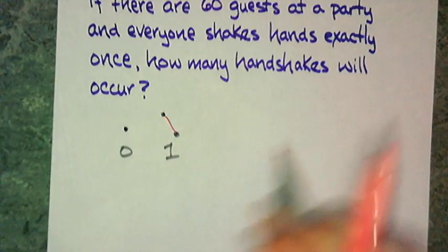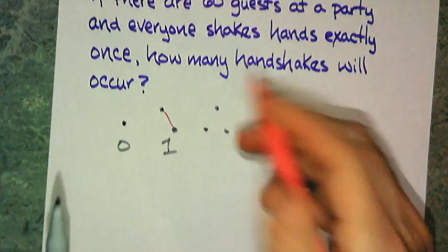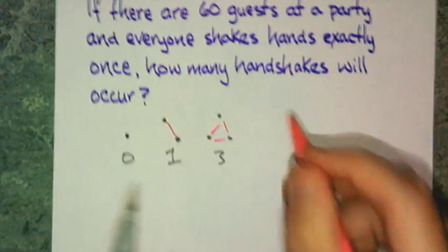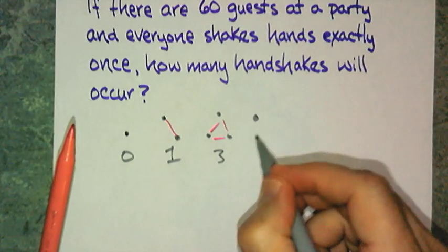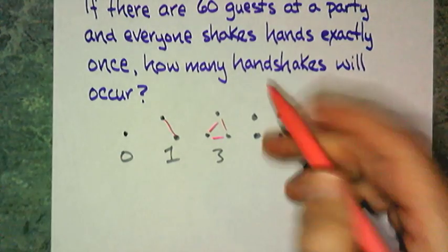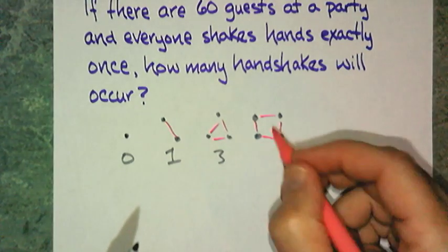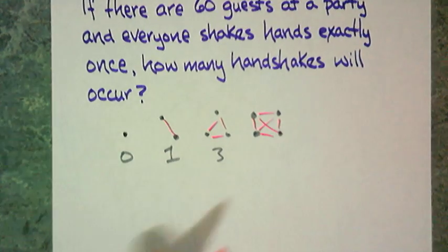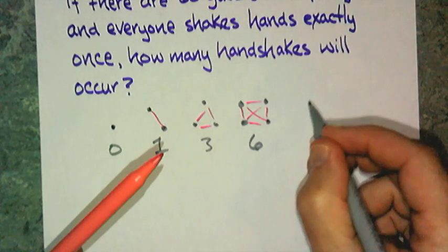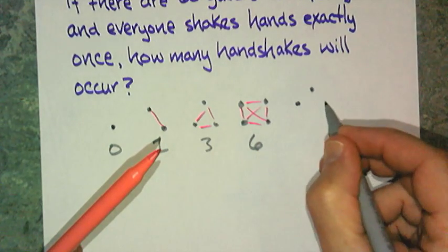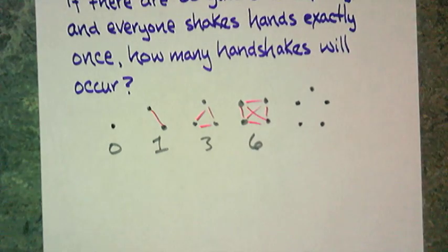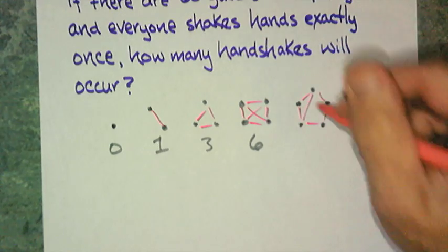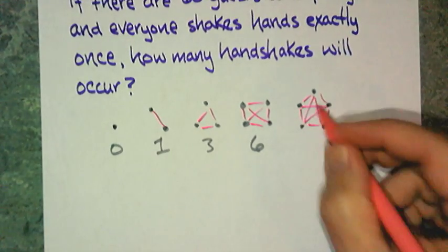3 people? There are 3 handshakes. 4 people? Now, it's going to be interesting. 1, 2, 3, 4. But this person's got to shake here and there. So, it's 1, 2, 3, 4, 5, 6 handshakes total. What about 5? 1, 2, 3, 4, 5 handshakes. 1, 2, 3, 4, 5, 6, 7, 8, 9, 10.